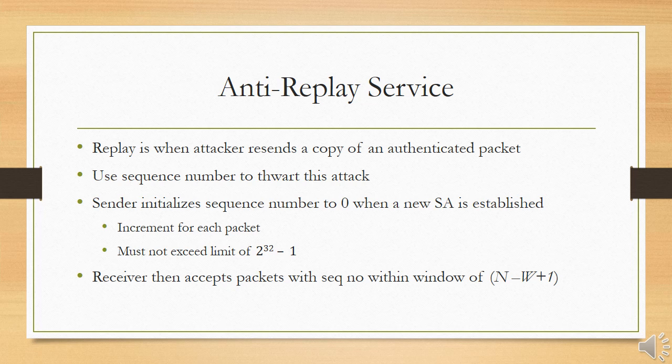When a new SA is established, the sender initializes a sequence number counter to 0. Each time a packet is sent on this SA, the sender increments the counter and places the value in the sequence number field; thus the first value is 1. If anti-replay is enabled, the sender must not allow the sequence number to cycle past 2^32 − 1 back to 0, as there would otherwise be multiple valid packets with the same sequence number. If the limit of 2^32 − 1 is reached, the sender should terminate this SA and negotiate a new SA with a new key.